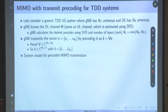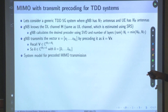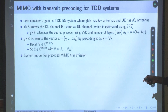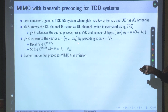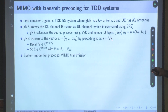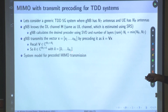What is the system model for this precoded MIMO transmission? We have created a precoded transmitted vector, and that is the vector we are going to transmit. Its dimension is nt×1 with nt components. After precoding, there are nt components. You can see the precoder as a mapping from NL dimension to nt dimension — blown up from NL to nt. There are nt antennas and an nt-dimensional vector, so each component is transmitted from a corresponding antenna.